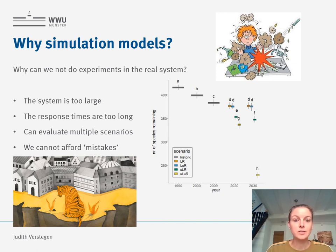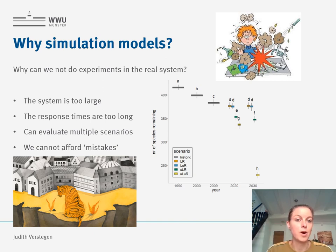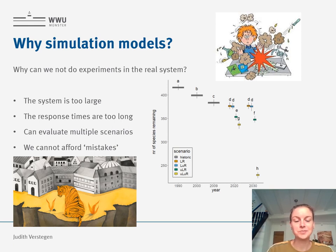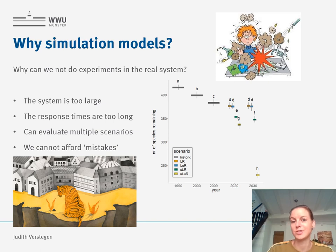Furthermore, with a geosimulation model we can evaluate multiple scenarios. We could test several places for the national park or for the highway, whereas in the real world system you can test only one option because there is only one world. Finally, in the real world we can't really afford mistakes. As the picture with the tiger illustrates, if we install the national park in the wrong place, we may still have a large decrease of biodiversity.